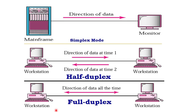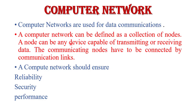Next is full duplex mode. In full duplex mode, both devices can transmit and receive data at the same time. The best example of full duplex is mobile phones. So these are the types of transmission mode.